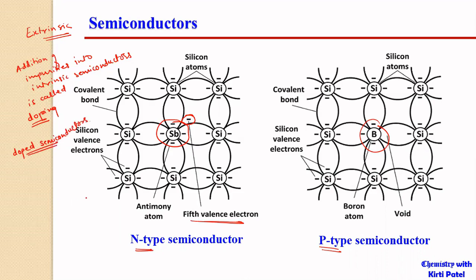If it is a P-type semiconductor, doping is done with trivalent atoms. For example, if we are adding boron — boron is trivalent, so it has three electrons. When forming bonds with silicon, boron lacks a fourth electron for the fourth bond, leaving an empty orbital. Since a bond is formed by two electrons, not one, a hole is created.